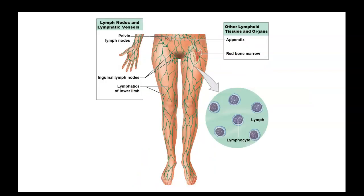Looking at the lower portion of the body, the main lymph nodes include the pelvic lymph nodes, which service everything in the pelvic region; the inguinal lymph nodes, found in the areas where the legs attach to the main trunk of the body; and the lymph nodes of the lower limbs. Other lymphoid tissue and organs in this portion include the appendix and the red bone marrow. The red bone marrow is important because this is where all blood cells are made — not only red blood cells, but also white blood cells, which contribute and turn into lymphocytes.